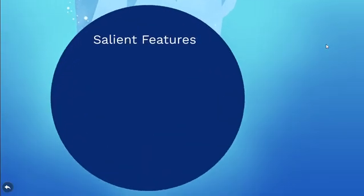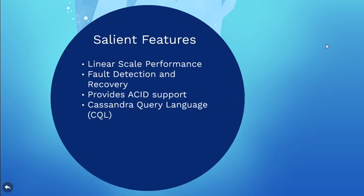Next, we see the features that make Cassandra unique. First is linear scale performance. As more nodes are added, the performance of Cassandra increases. Failed nodes can easily be restored and recovered. It provides ACID support: atomicity, consistency, isolation and durability.